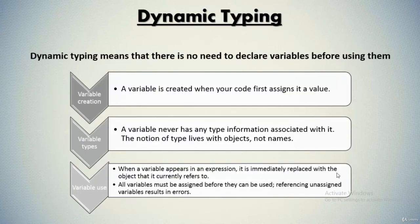Now let's understand what we mean by dynamic typing. Dynamic typing means that there is no need to declare a variable before using it. You don't require a variable to be declared; you can use it without actually declaring it. The variable will automatically be declared while you're using it and you assign it a certain value. So a variable is created when your code first assigns it a value.